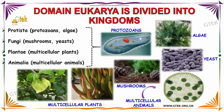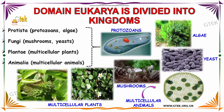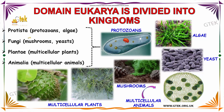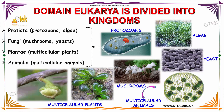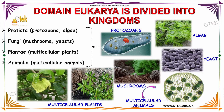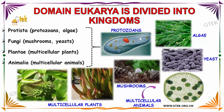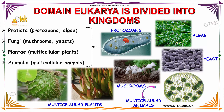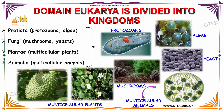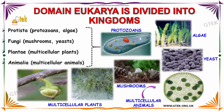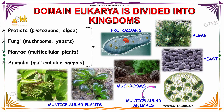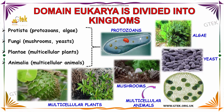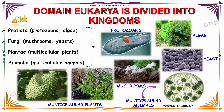Let us talk about Domain Eukarya, which is divided into kingdoms: Protista — also called protozoans and algae; Fungi — for mushrooms and yeast; Plantae — for multicellular plants; and Animalia — for multicellular animals. You can see the protozoans, algae, yeast, mushrooms, multicellular plants, and multicellular animals here.